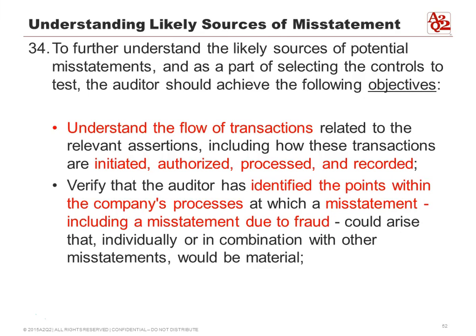Paragraph 34 says you have to understand the sources of misstatements, and to do that, you have to understand the flow of transactions — starting from when a transaction is initiated, to when it's authorized, when it's processed in the system, and when it finally reaches the general ledger or the financial statements themselves. Those are the areas of focus. As the SOX auditor, we have to identify the points within the processes where a misstatement could happen.